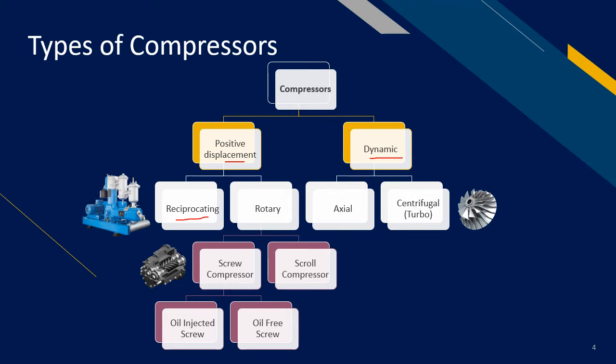The other type of positive displacement is rotary. As the name suggests, the elements in the compressor rotate to compress air. Rotary consists of screw compressors, which are commonly used and have relatively quiet operation, suitable for laboratories. It consists of oil-injected screw compressors and oil-free screw compressors. Oil-injected screw compressors use oil to lubricate the compression chamber, whereas for oil-free screw compressors, no oil is used, so the air being compressed will be oil-free.